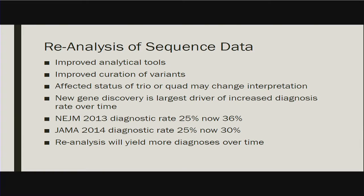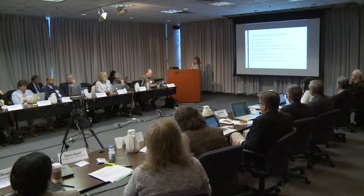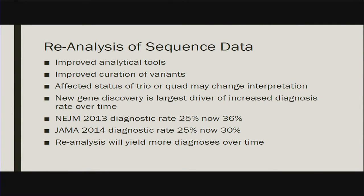Reanalysis of sequence data is important because analytical tools are advancing, enabling us to look at areas that perhaps were not examined during the first pass of sequence analysis. There is also improved curation of variants — as patients are identified with certain variants, this information comes to bear on new patients. We may get additional information from family members not available at the time of initial interpretation; the affected status of a member of the trio or quad could change, influencing the interpretation. But all of those things really pale in comparison to new gene discovery, which is really the largest driver of increased diagnosis rate over time.